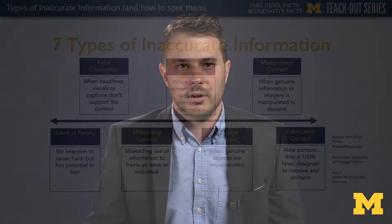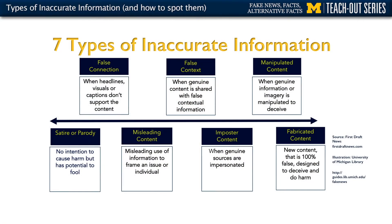We're going to be working from a typology of seven different types of inaccurate information. This is a typology that was developed by First Draft News, which is an organization that helps people sift through fact and fiction in the digital media environment. The graph we're looking at here was created by the library at the University of Michigan. We're going to talk through each of these seven types in this segment.